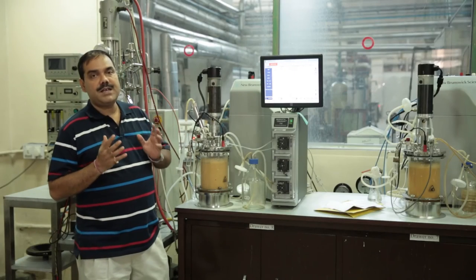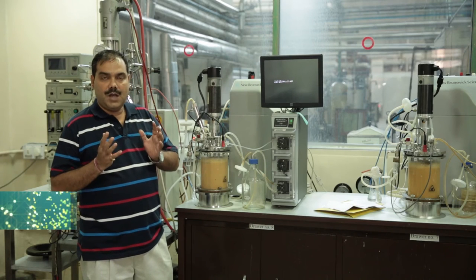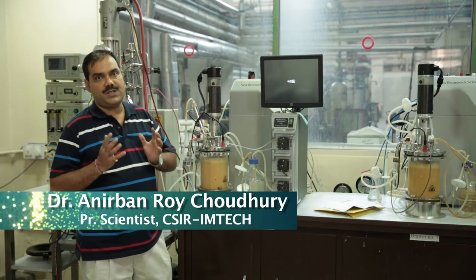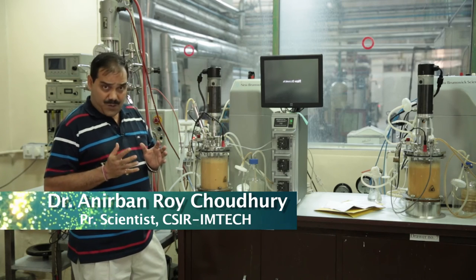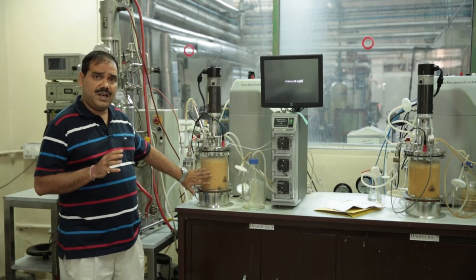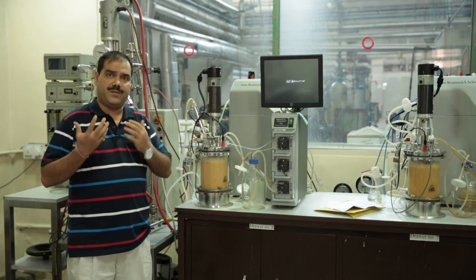In nutshell, in CSIR-IMTECH, we have developed a technology for production of pullulan by using an osmotolerant non-pigmented strain of Aureobasidium pullulans. The process has been initially optimized in shake flask level and further transferred to laboratory-scale fermenter level and now being taken up to higher scales of 100-litre and 500-litre fermenters.